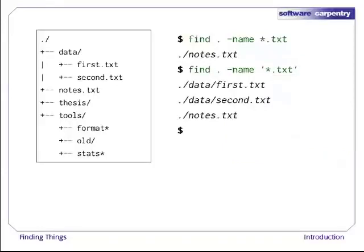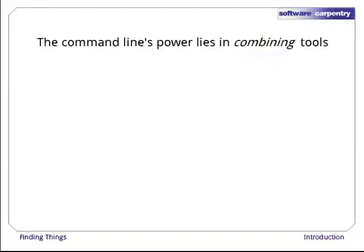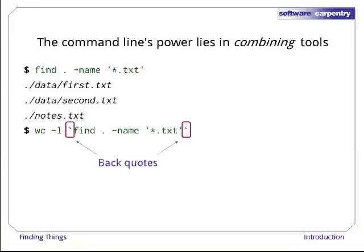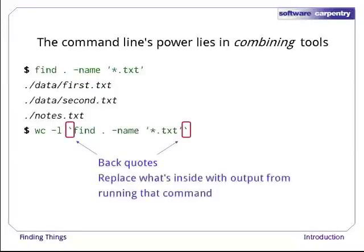As we said in previous episodes, the command line's power lies in combining tools. We've seen how to do that with pipes. Let's look at another technique. find . -name '*.txt' in quotes gives us a list of all text files in or below the current directory. Here's how to combine that with wc -l to count the lines in all those files. The trick here is to put the find command inside back quotes. This tells the shell to run find and then replace what's in the back quotes with the command's output. This is exactly what the shell does when it expands star, question mark, and other built-in wildcards, but more flexible, since we can use any command we want as our own wildcard.